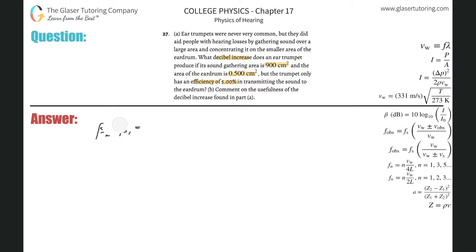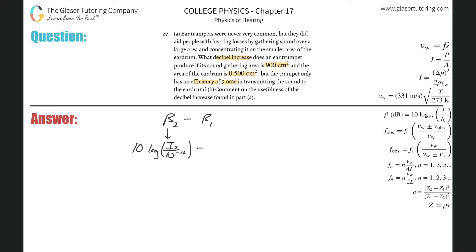We write beta 2 minus beta 1 and expand each term. This becomes 10 times log base 10 of I₂ over the threshold of hearing (10 to the minus 12), minus 10 times log of I₁ over the threshold of hearing (10 to the minus 12). You can also think of this as final minus initial.